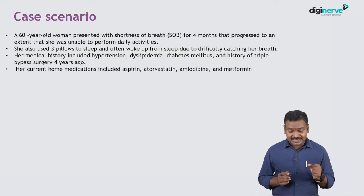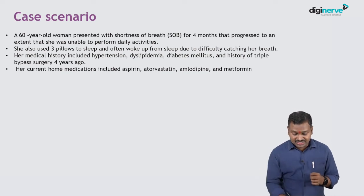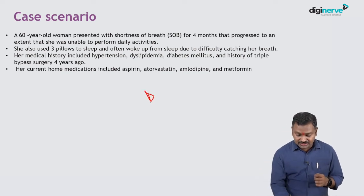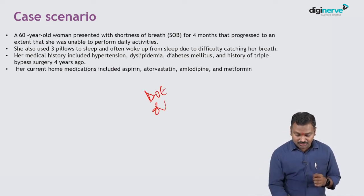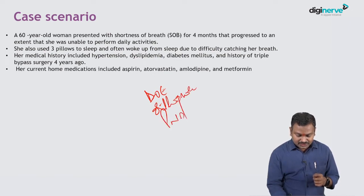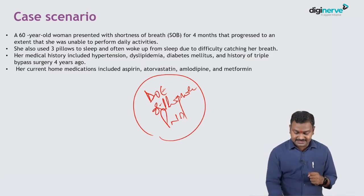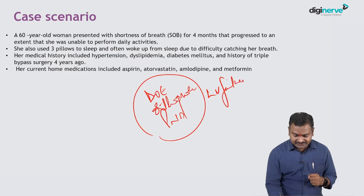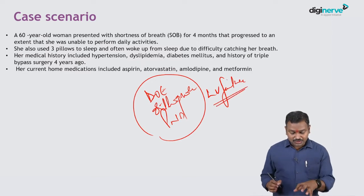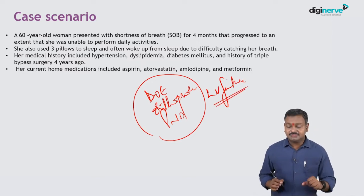So here we have an elderly female who comes with dyspnea on exertion, orthopnea, and PND. These symptoms could be suggestive of a cardiac disease, possibly left ventricular failure. That's what we can infer from this history.